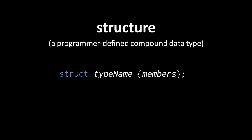C is not object-oriented and so has no concept of classes, but it does have user-defined data types called structures. Unlike a class, a C structure has no notion of methods — a structure is just pure data.